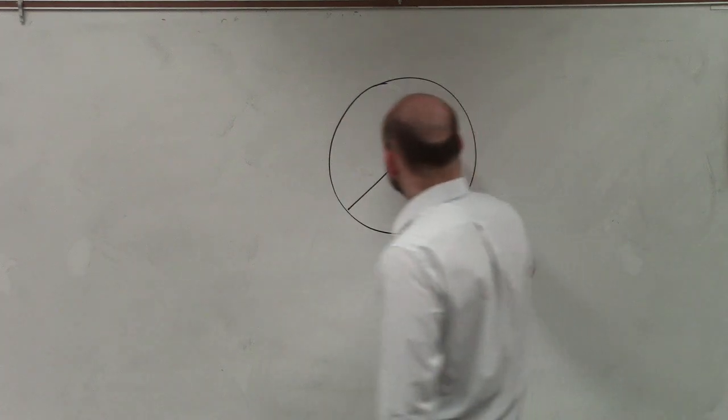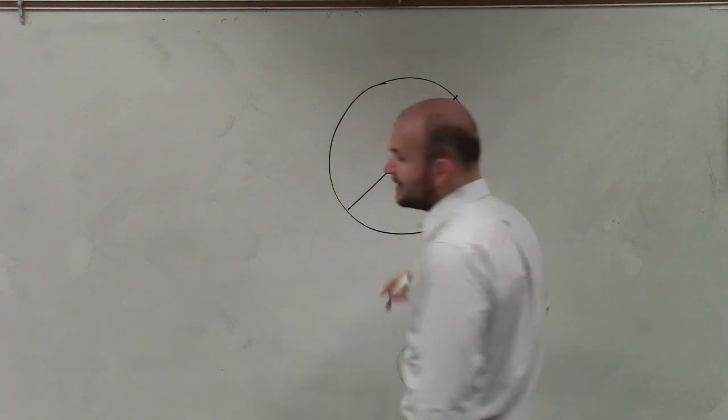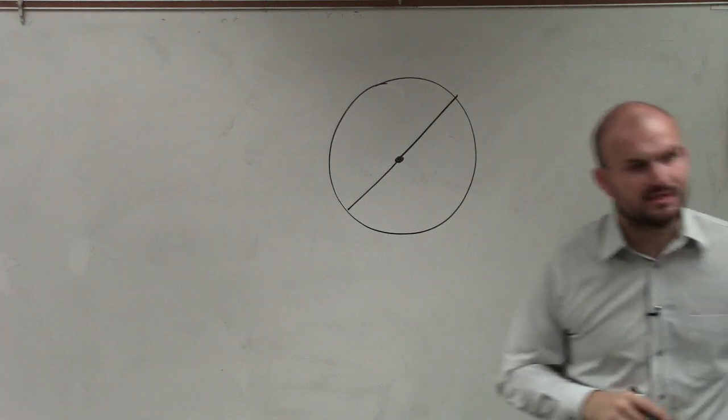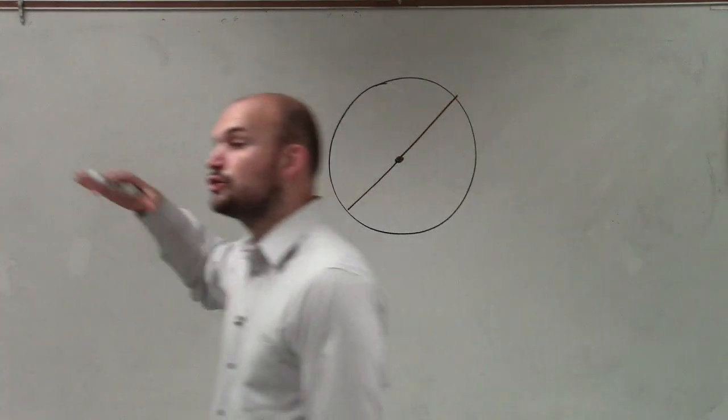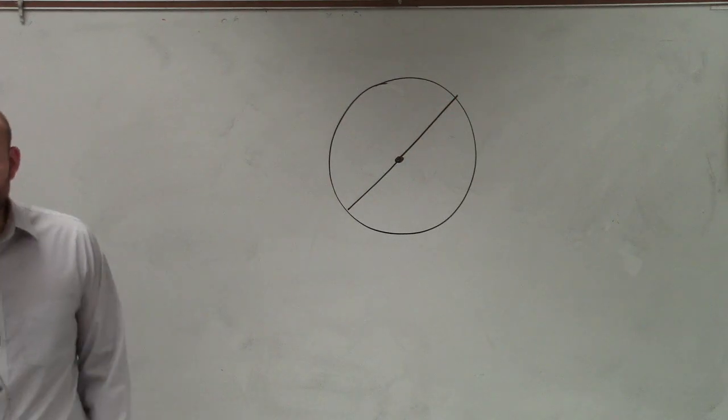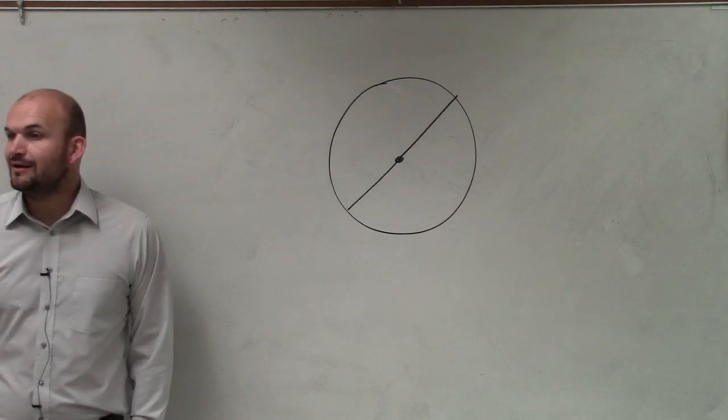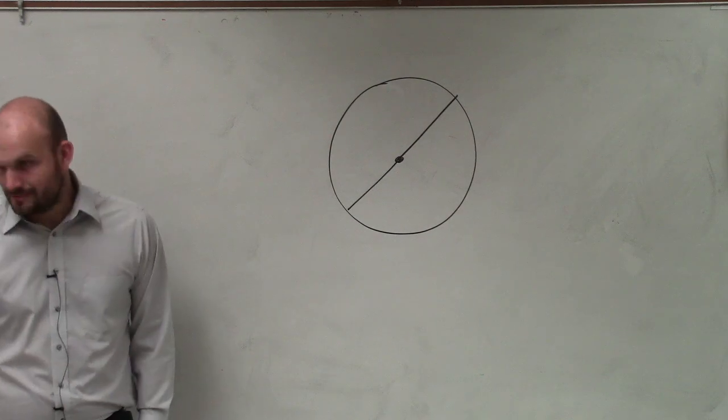Now, we know that if I extend that radius in both directions, then we create a straight line across a circle that goes through the center, which we call the diameter.